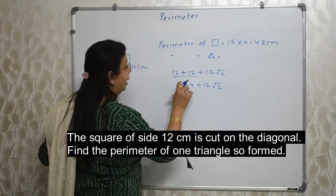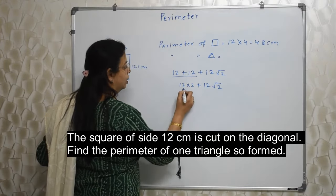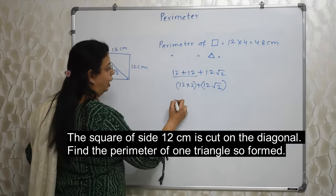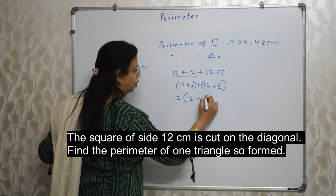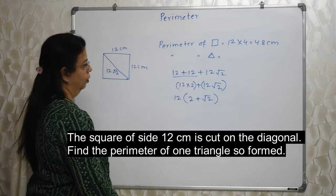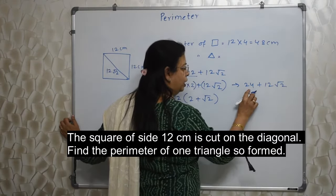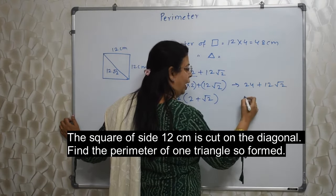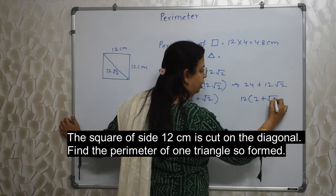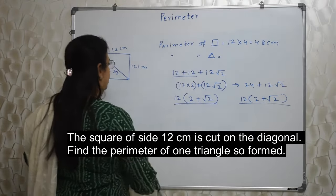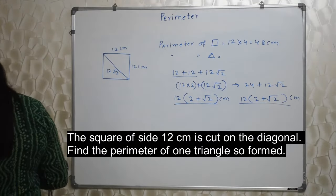I can write this as 12 into 2. Out of that, 12 I can take out as common, so 2 plus root 2 will remain inside. So the answer is 12 into bracket 2 plus root 2 centimeter. Very, very easy. Only thing is you should know that if side is x, then diagonal of a square is x root 2.